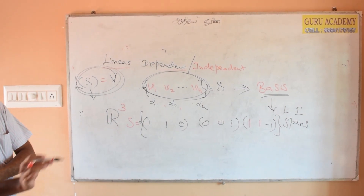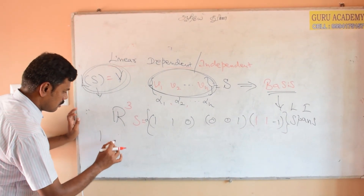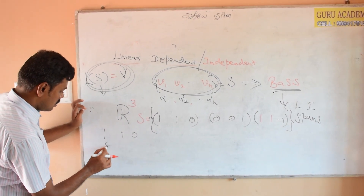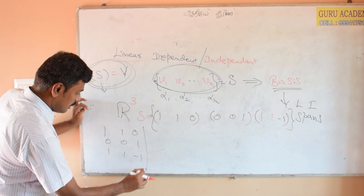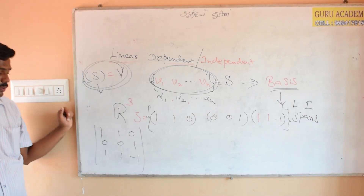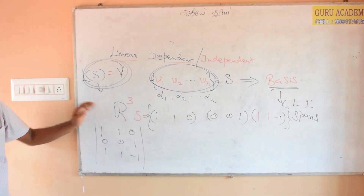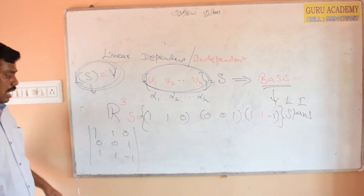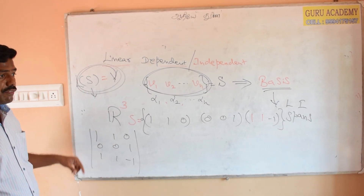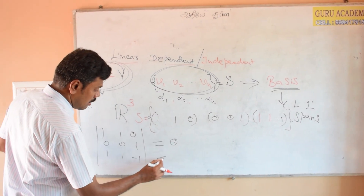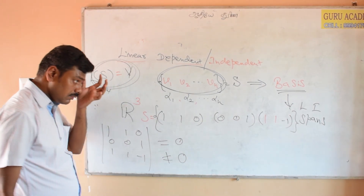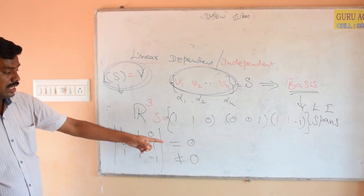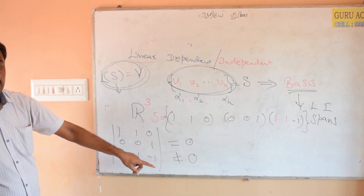Form a matrix using these vectors as rows. The matrix entries are: 1, 1, 0 / 0, 0, 1 / 1, 1, -1. Compute the determinant of this matrix. If the determinant is non-zero, the vectors are linearly independent. If the determinant is zero, the vectors are linearly dependent.